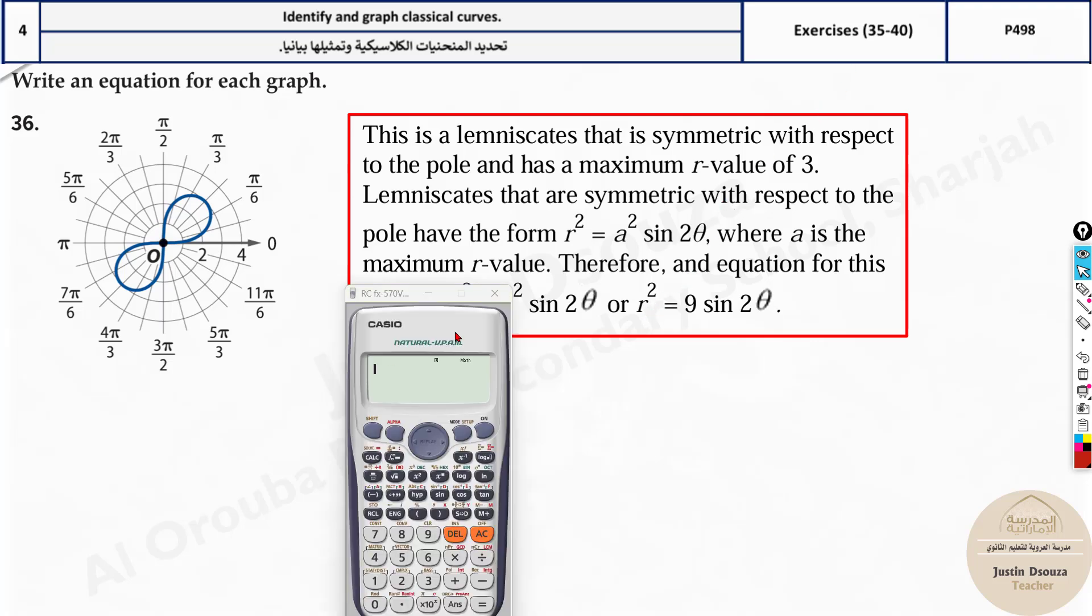Looking at the standard form you can easily tell. But imagine you can't remember the standard form, you need the calculator method. For lemniscate, remember it's not like a circle, so I generally focus only on the first part, from 0 to 90 degrees. Just focus over there. Why? Because if you take 360 degrees you won't get the proper values.